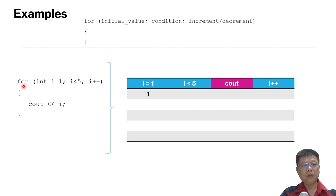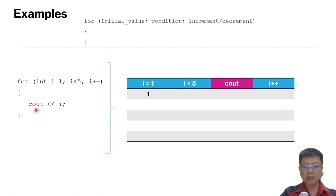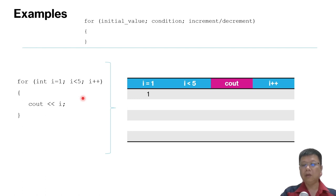Look at this example. We have a for loop. We declare integer i, and 1 is assigned to i as the initial value. This integer i will be repeated, and the condition must be i less than 5. Every time the for loop runs, it will increase by 1. The inner part of the code displays the i value. To trace this, we can prepare a table.